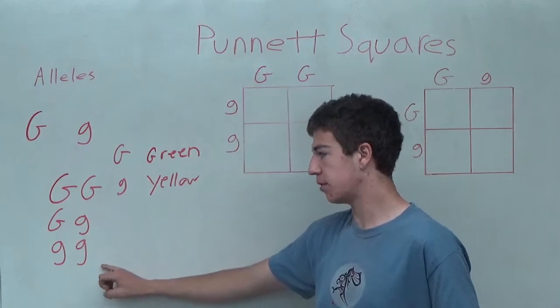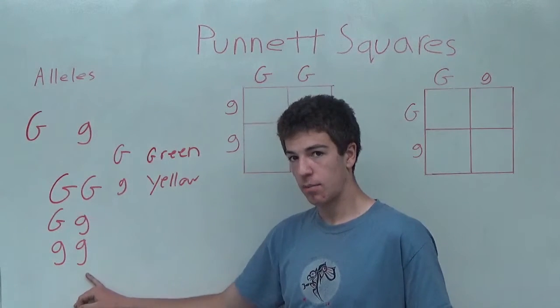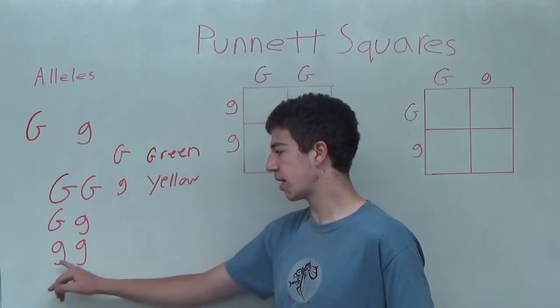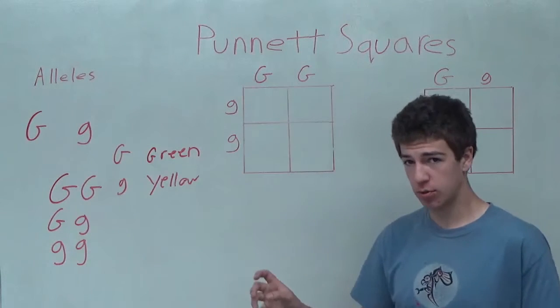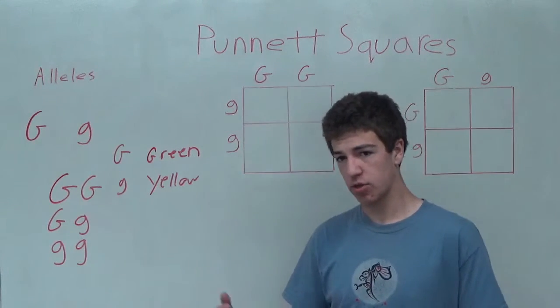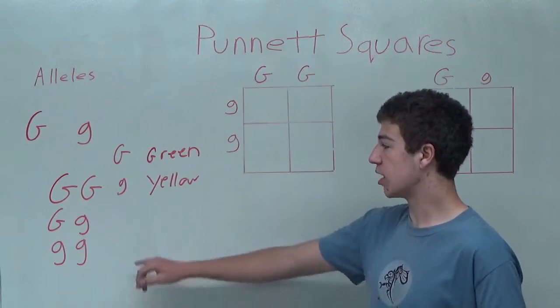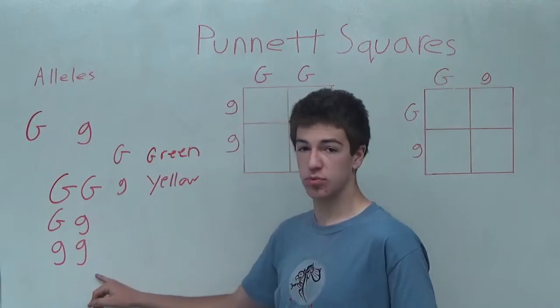However, in this third example, since the genotype provides only two lowercase g's, its phenotype, which is what it looks like when you look at it, will become yellow because it only has recessive traits.